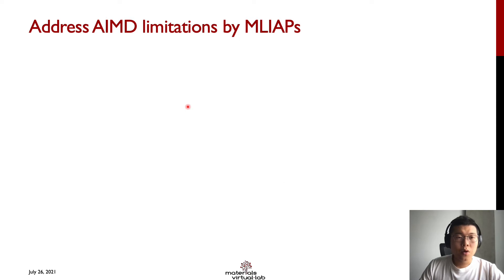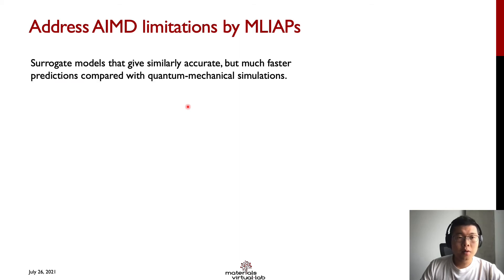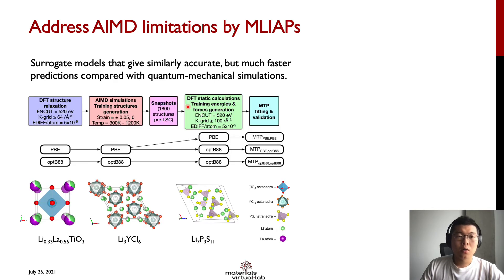In our study, we addressed AIMD limitations by using machine learning interatomic potentials, or MLIAPs. MLIAPs are surrogate models that give similarly accurate but much faster predictions compared with quantum mechanical simulations. Using the workflow shown, we generated MLIAPs for three electrolytes, and they are at least three orders of magnitude faster in computational speed compared with AIMD. With that, we were able to extend our simulation time to the nanosecond scale, and our simulation cell can contain more than 1000 atoms.